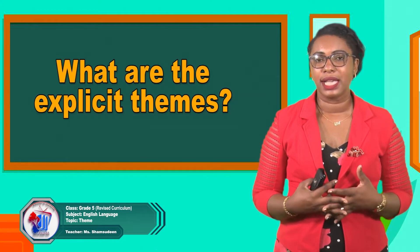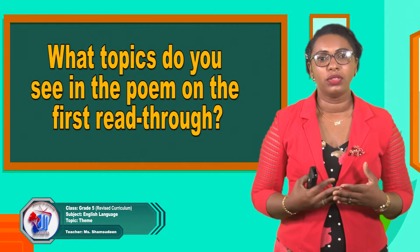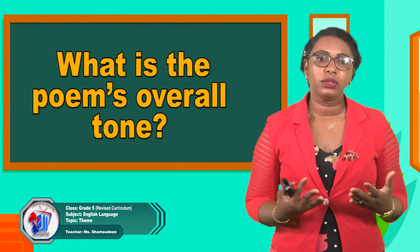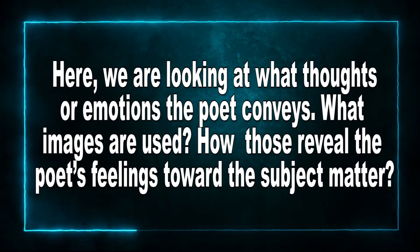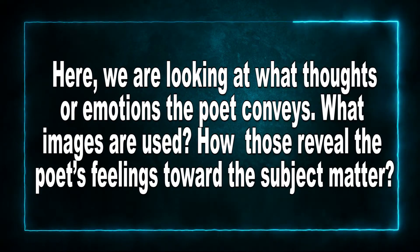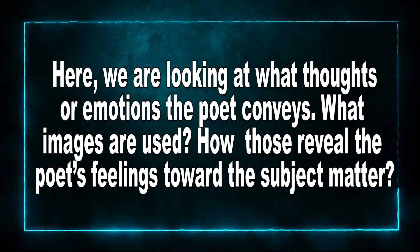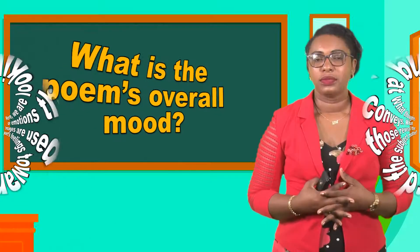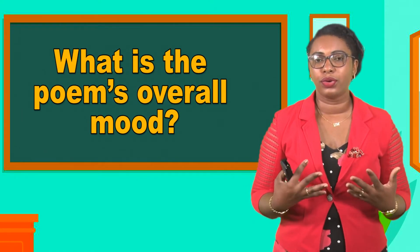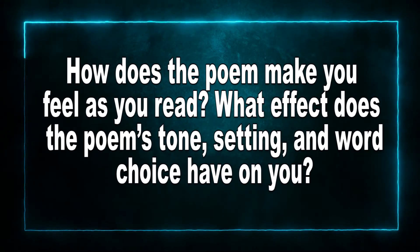There are four questions we could ask as we try to identify the theme of a poem. First, what are the explicit themes? In other words, what topics do you see on the first read through — what things come to mind, what speaks to you through the words? Second, what is the poem's overall tone? Here we look at what thoughts or emotions does the poet convey, what images are used, and how those reveal the poet's feelings toward the subject matter.